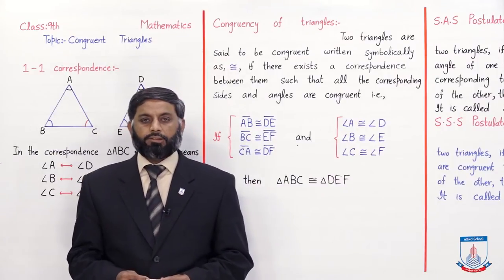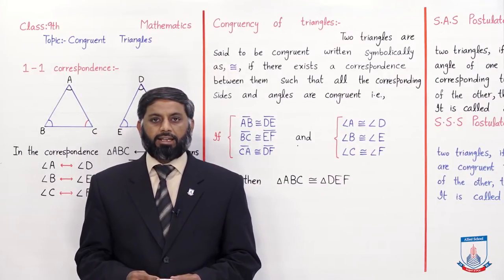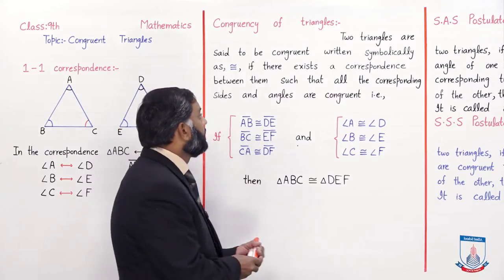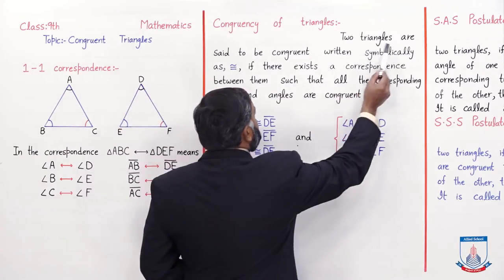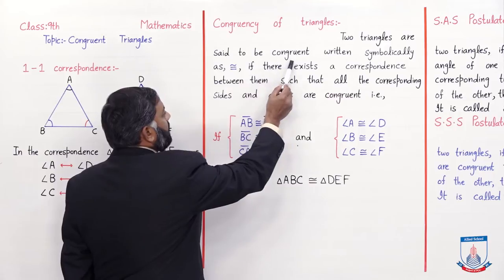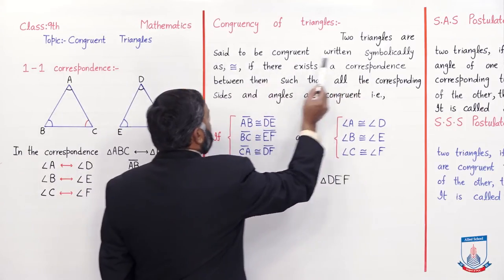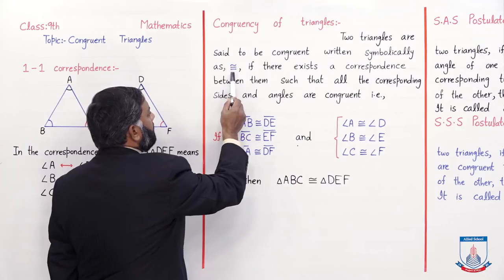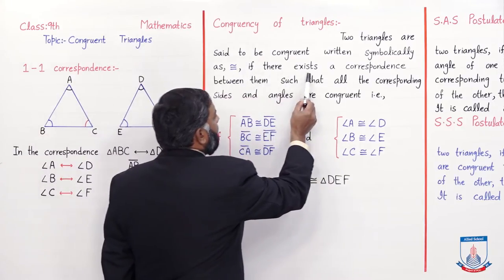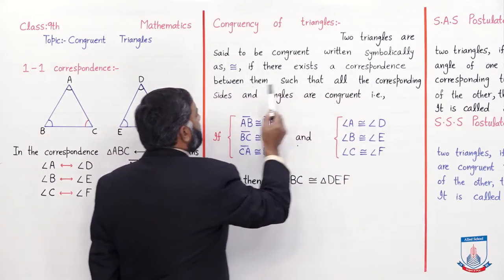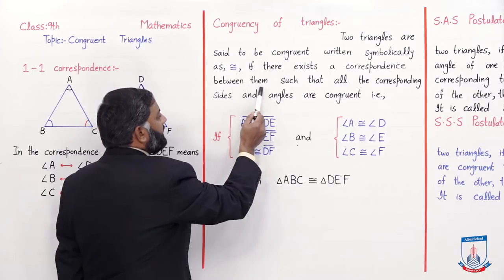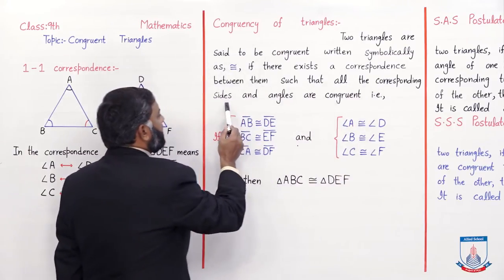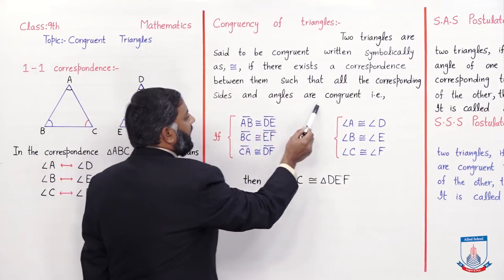Students, congruency of triangles ki definition samajhte hain. Two triangles are said to be congruent — written symbolically as this congruent symbol — if there exists a correspondence between them such that all the corresponding sides and angles are congruent.